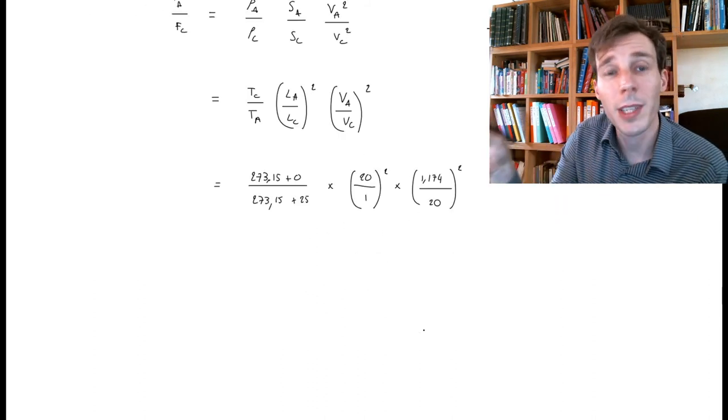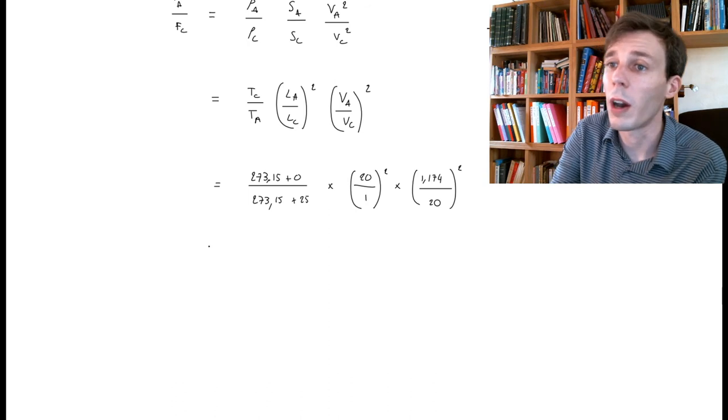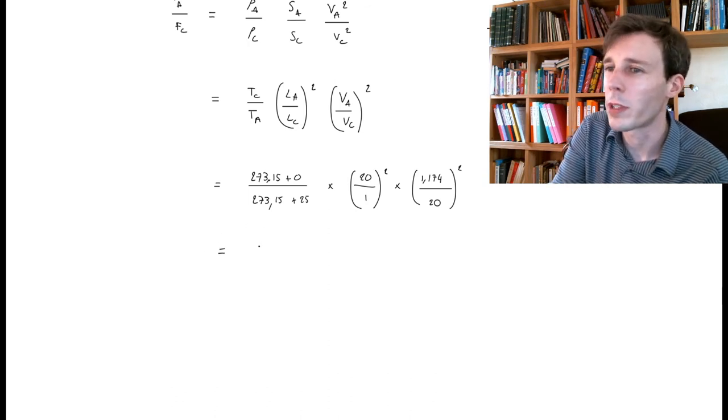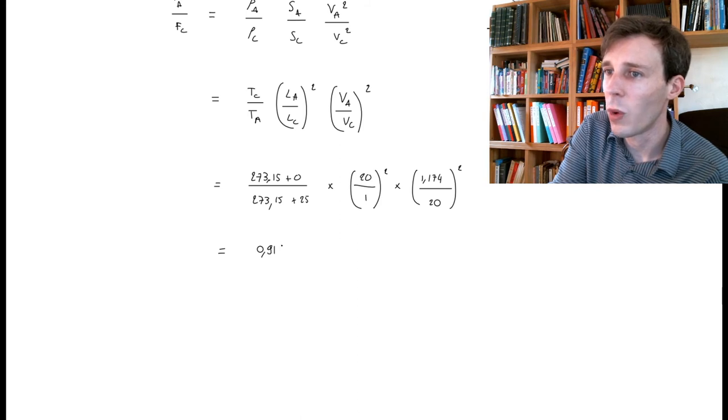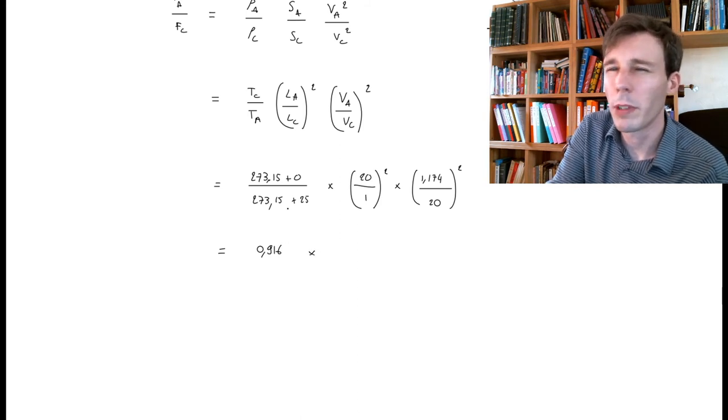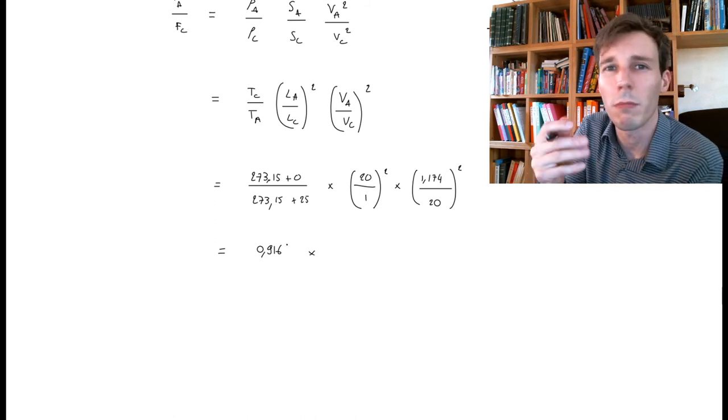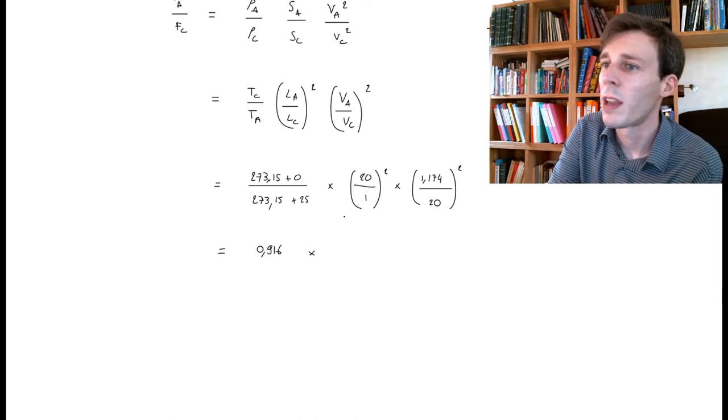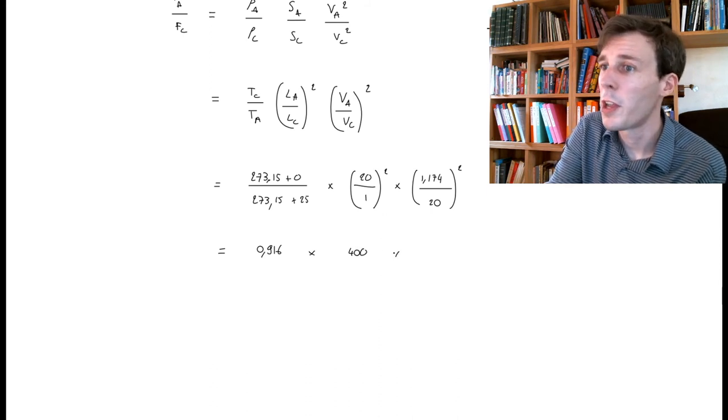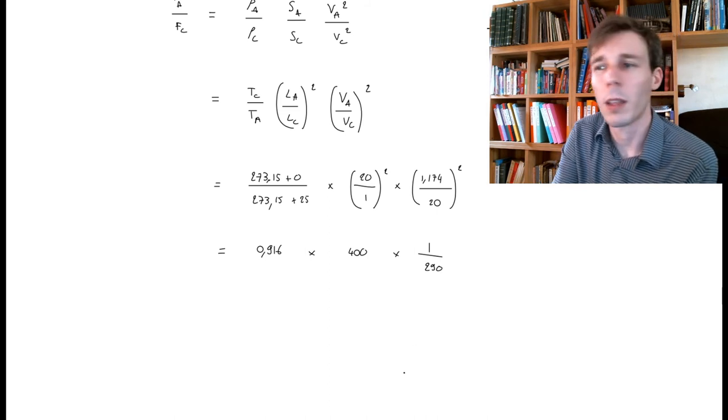And I could put this directly into my calculator, but I like to compare the size and the influence of different terms when I calculate things like this. And so I did this before, and it turns out to be 0.916 for temperatures. You see that by reducing the temperature, we have a factor of about 9, 10% coming in. This is a factor of 400, the second one here. And the third one happens to be a factor of 1 over 290, like this.